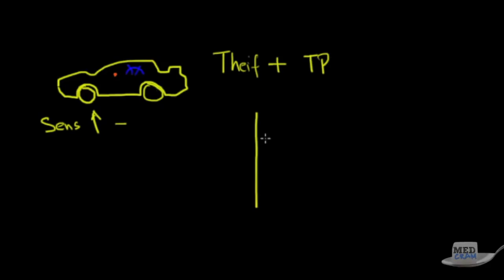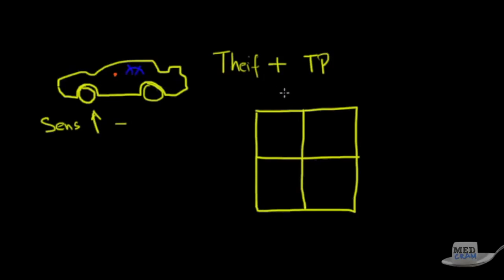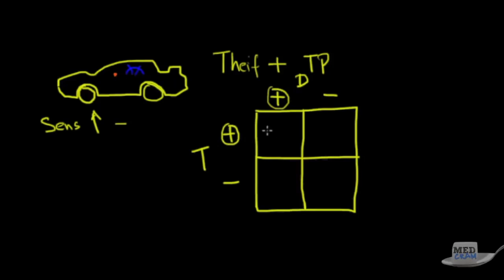You can break this up into a square with four possibilities. In terms of the disease — your car being broken into or not — and the test — the alarm going off or not — if there's a thief and the alarm goes off, that's a true positive. If there's no thief but the alarm goes off, that's a false positive — like a motorcycle going by or someone touching the car. You go out, the alarm's going off, but no one's tried to break in.